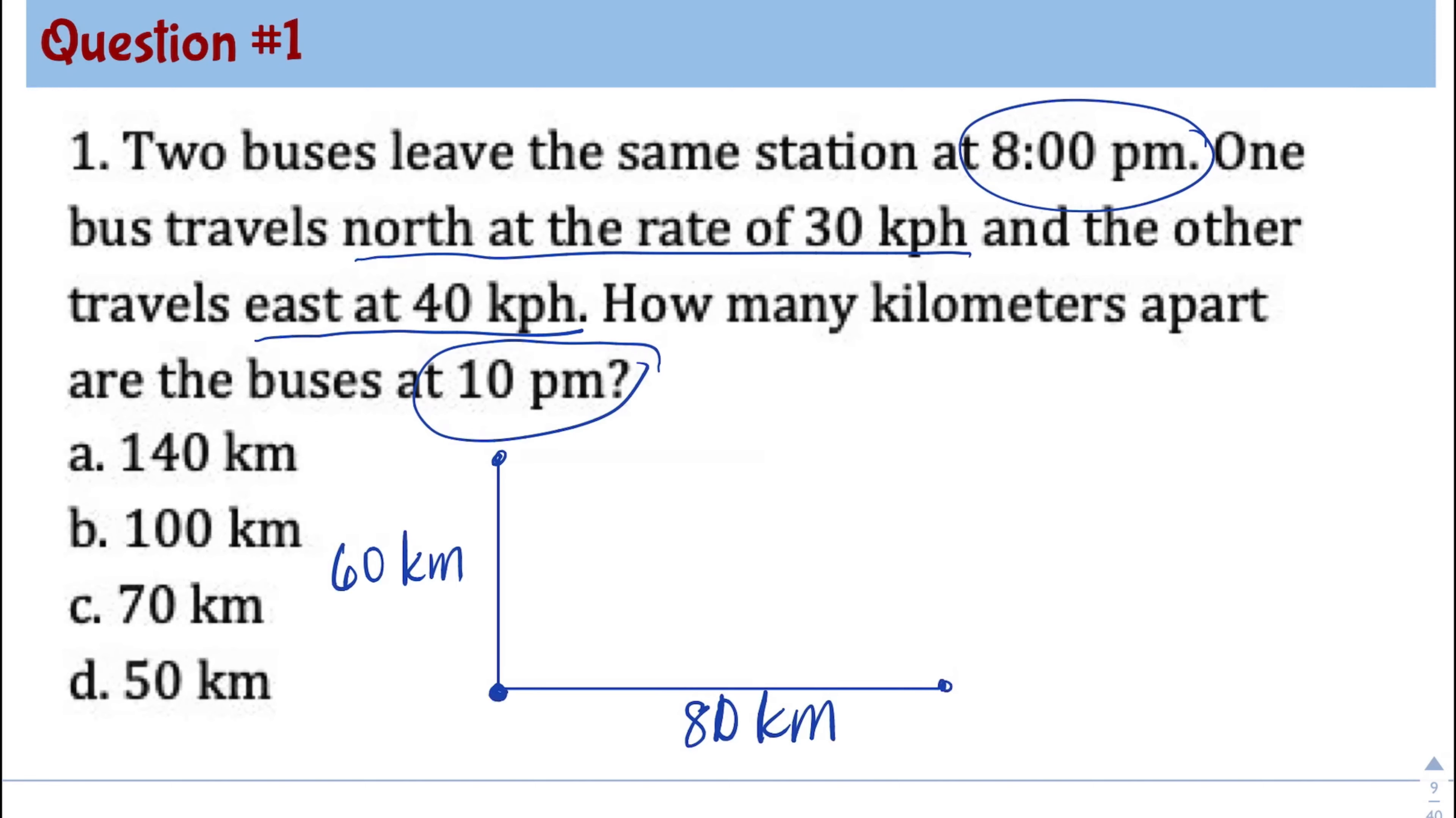And the question is, how many kilometers apart are the buses at 10 p.m.? So this means we need to find this missing distance. And we will label this C. Since one bus travels north and the other one travels east, we know that this will be a right triangle. And if that is a right triangle,